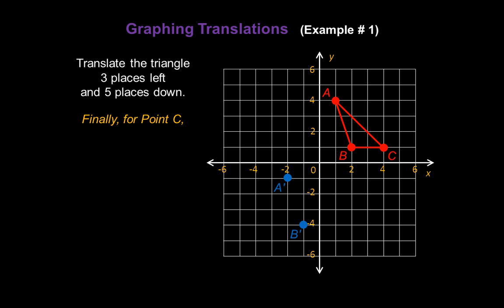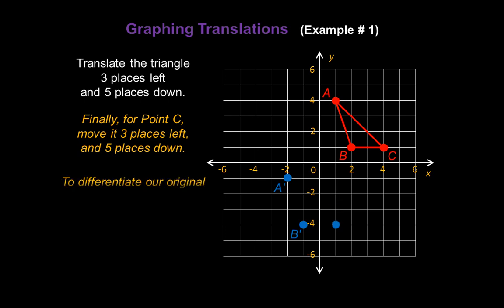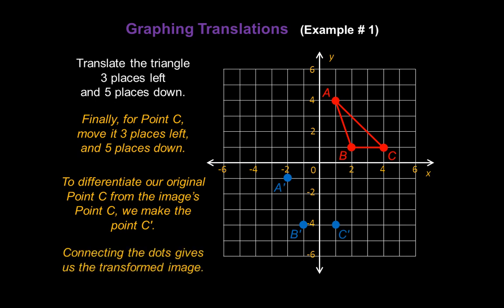Finally, let's work with point C. We're going to move it three places to the left as well: one, two, three. And then five places down: one, two, three, four, five. Again, to differentiate our original point C from the image's point C, we're going to make this point C prime. Now all we have to do is connect the dots, and that gives us our transformed image.